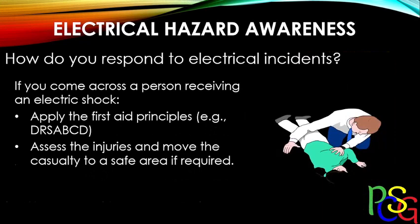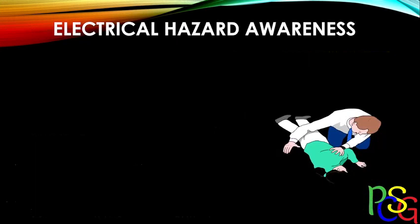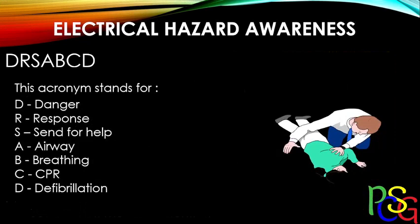Once the person is away from the electrical source, apply first aid principles — DR SABC D: Danger, Response, Send for help, Airway, Breathing, CPR, and Defibrillation. Assess the injuries and move the casualty to a safe area if required, then administer first aid if trained and seek urgent medical attention. You check for danger, respond, send for help, ensure the airway is clear and the person is breathing, perform CPR if needed, and use a defibrillator — which applies controlled voltage to restart the heart — if CPR does not work.